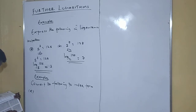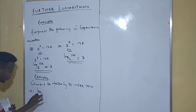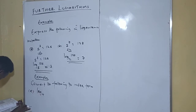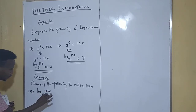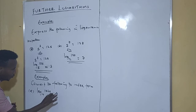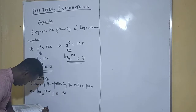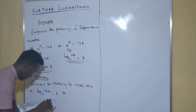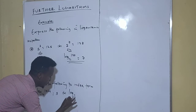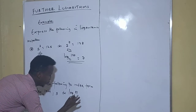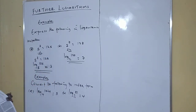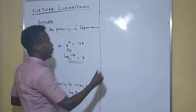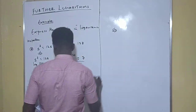We have question A: log base 4 of 1024 is equal to 5. Then we have question B: log base 3 of 81 is equal to 4. So these are in log form and we are going to convert them into index form.